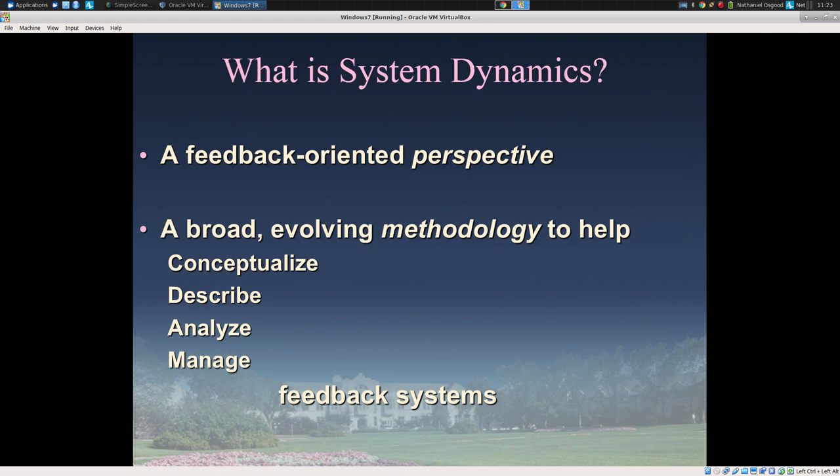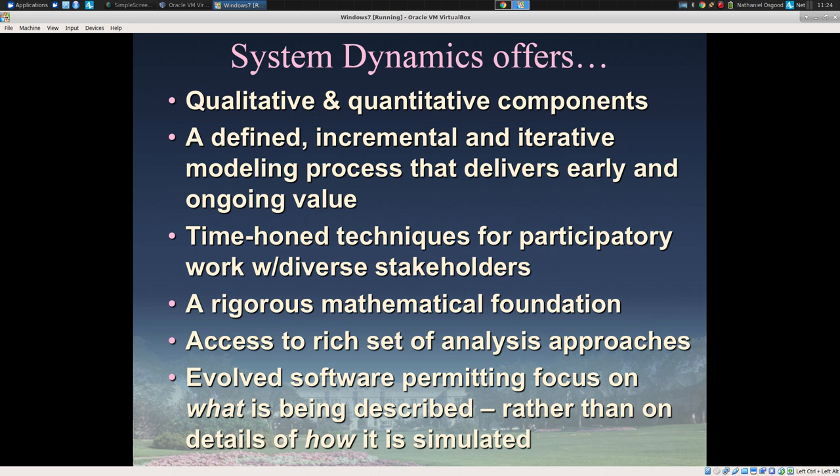System dynamics, in the form that goes by that name, originates in the work of Forrester in the 50s and early 60s — what he termed industrial dynamics. It came out of work within feedback control theory and cybernetics. It's a tradition notable for having qualitative as well as quantitative components. There's a very strong systems thinking tradition that draws on ideas from system dynamics, pursuing them in semi-quantitative or qualitative tools such as causal loop diagrams and system structure diagrams.